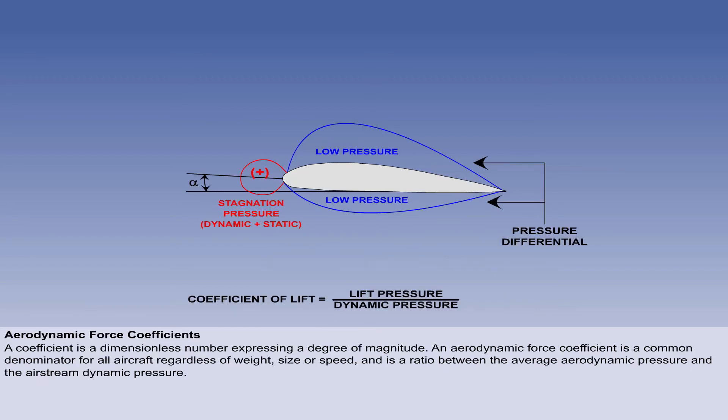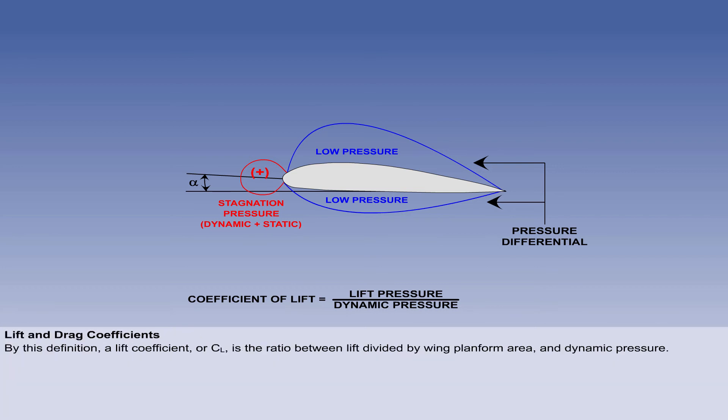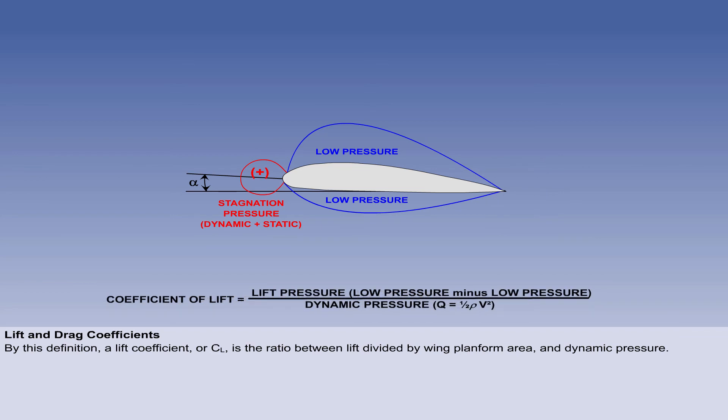A coefficient is a number without unit or dimension, expressing a degree of magnitude. An aerodynamic force coefficient is a common denominator for all aircraft, regardless of weight, size or speed, and is a ratio between the average aerodynamic pressure and the airstream dynamic pressure. By this definition, a lift coefficient, or CL, is the ratio between lift divided by wing platform area, or lift pressure, and dynamic pressure.